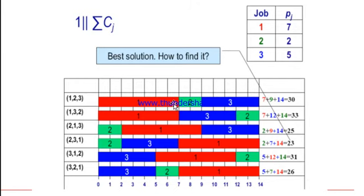If we start with job one, it takes us to seven. Job two takes us to nine, that means nine hours, and 14. All of them finish at 14, but the summation of the completion time for job two would be nine. So you add 7 plus 9 plus 14, which equals 30.